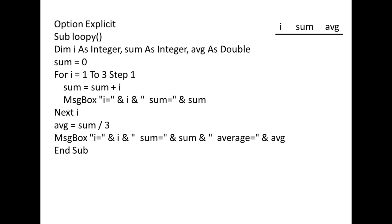When the variables i, sum, and avg are declared, they are assigned default initial values of 0. Next, sum is assigned the value 0. In this particular example, the sum equals 0 statement is unnecessary since sum is assigned the value 0 when it is declared. However, it is good programming practice to set the summation variable to 0 before the loop begins, just in case you assigned a non-zero value to it earlier in the program. At the start of the for loop, i is assigned the value 1. Since i is less than or equal to 3, we enter the loop. Sum is assigned the current value of sum plus i, which is 0 plus 1, so the new value of sum is 1.